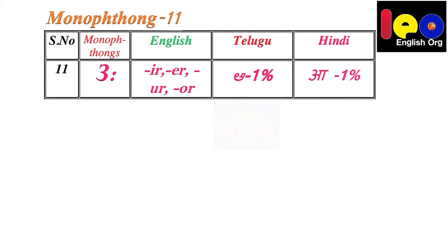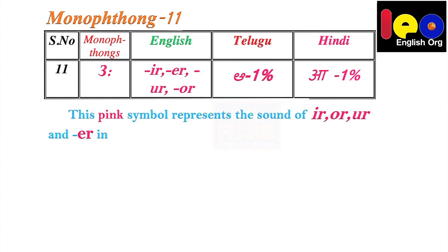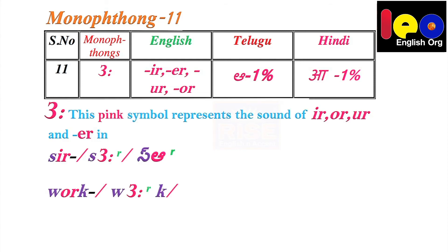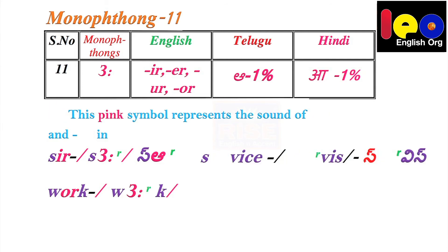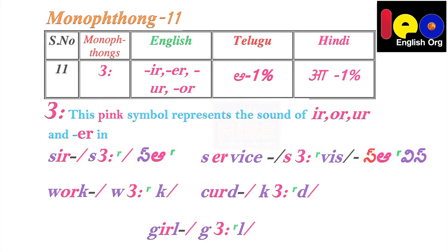Monophthong 11. This pink symbol looks like the number three, and there are two dots after it. This must be taken as a long O — very light and long. This symbol represents the sound of IR in 'sir,' OR in 'work,' ER in 'service,' UR in 'cur,' and IR in 'girl.'